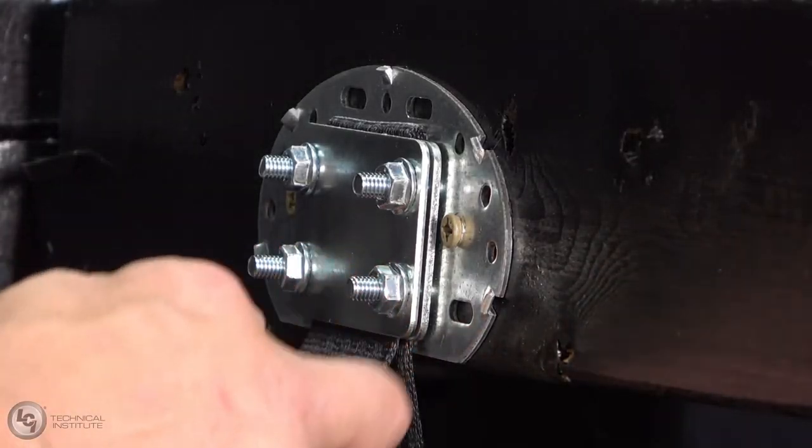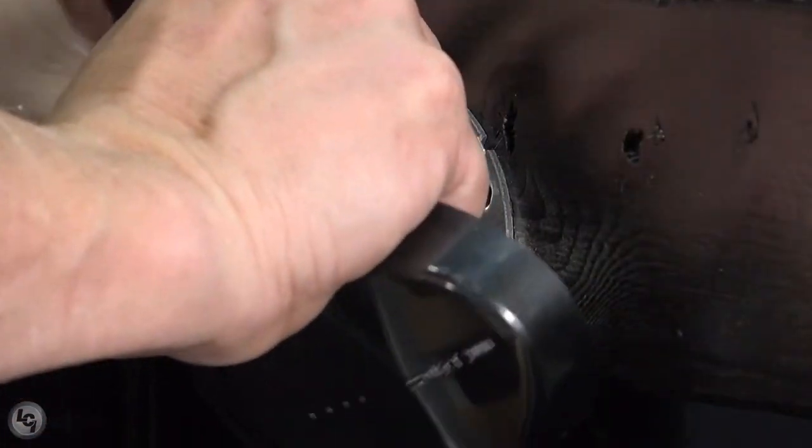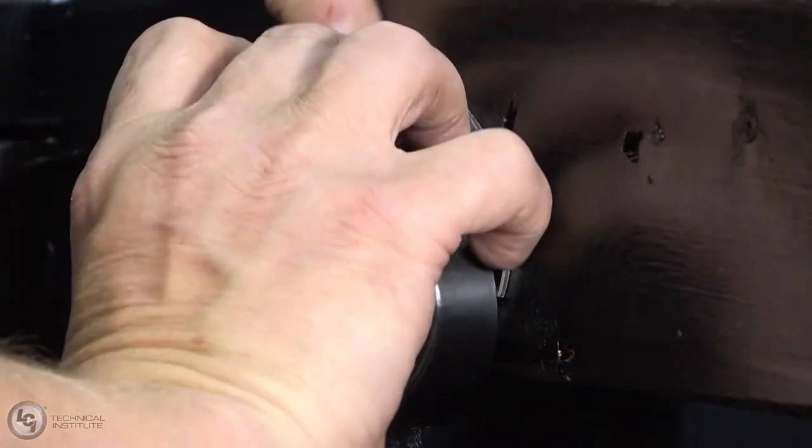Fold any excess belt lengths up and store it behind the bracket cap as you replace it over the bracket. It should click into place.